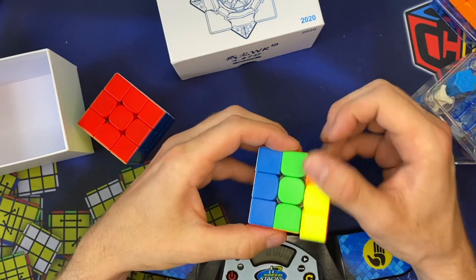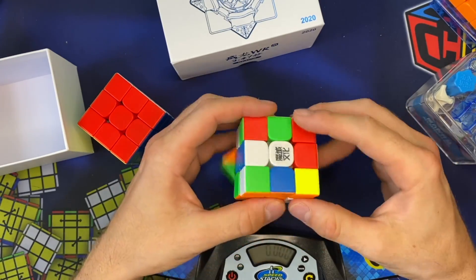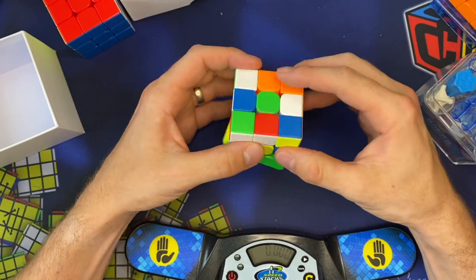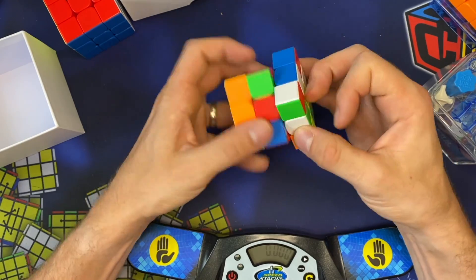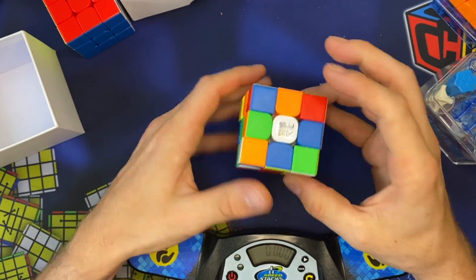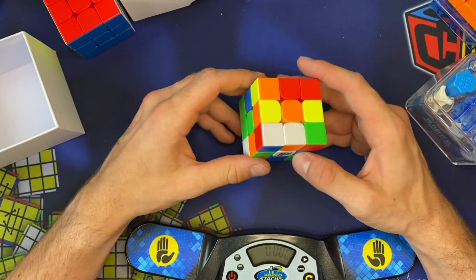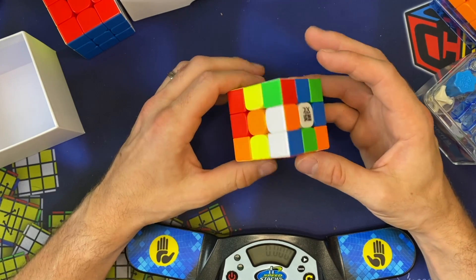I'll just do some random turns, not any specific scramble. Let's clear this out. I'll do some CFOP and some Roux. That's pretty good. Let's inspect this. And I'll try to keep it in the frame, but I'm not looking at the camera, so I apologize if I do go out of frame.